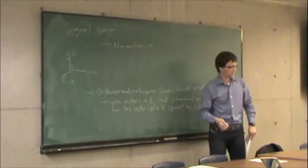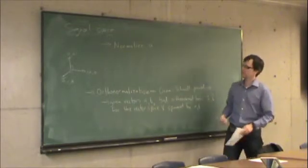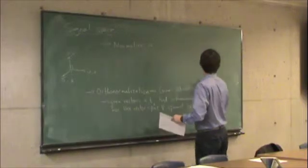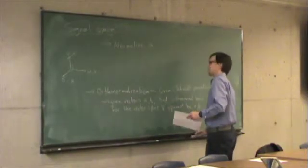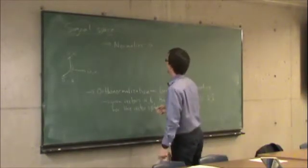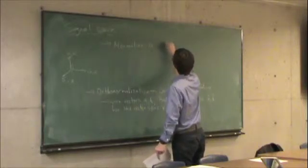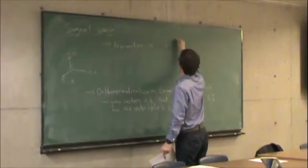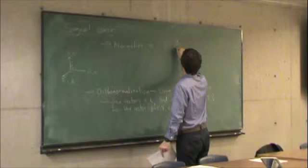They're all linearly independent, so it doesn't really matter where you start. So we can start with A and we can say A hat is equal to A divided by the norm of A.